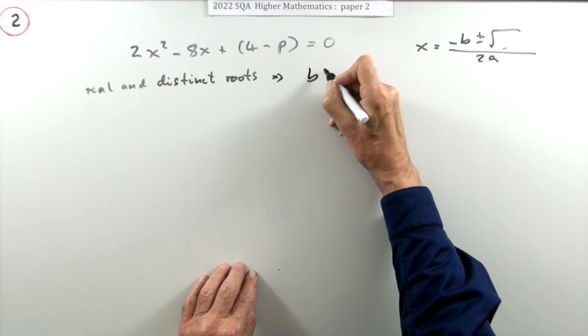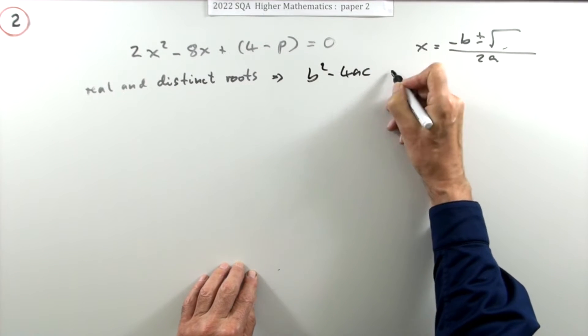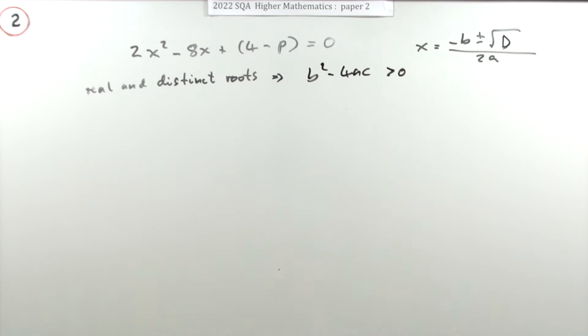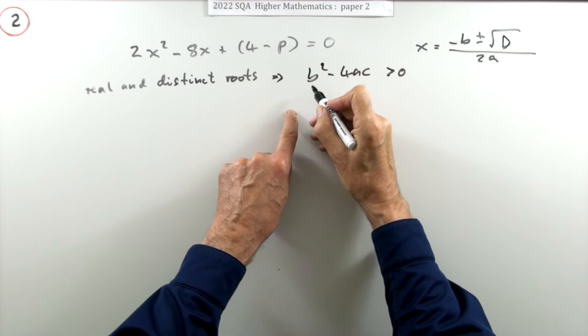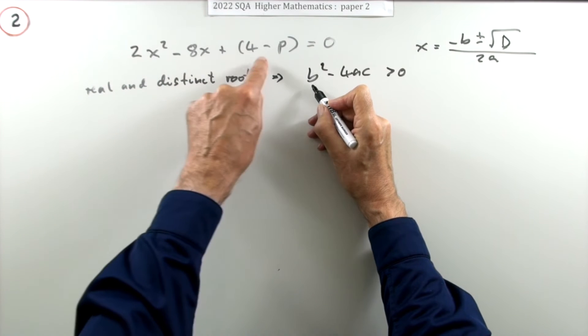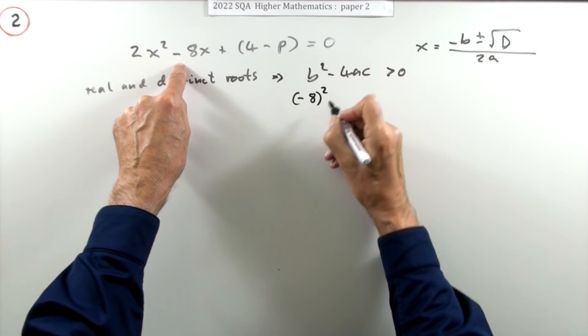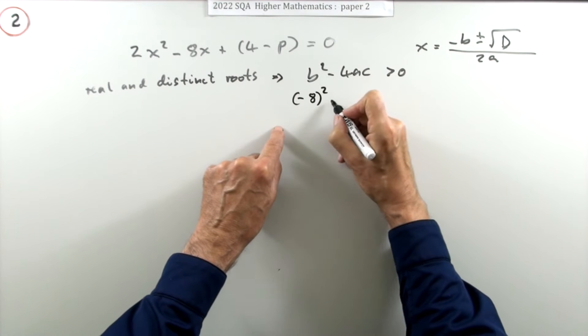That means the discriminant b² minus 4ac, the thing that would have been in here, this discriminant has to be greater than zero. Well, what are those bits? Just be careful with them. b goes... b is the negative 8. Keep it safe, put it in a bracket.